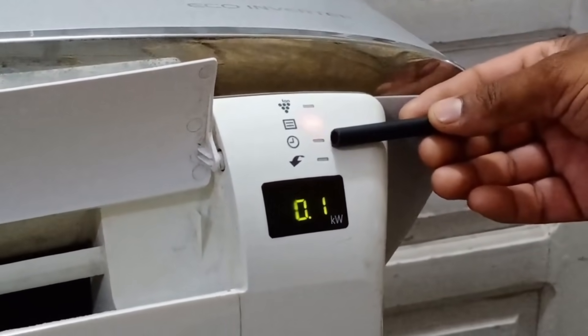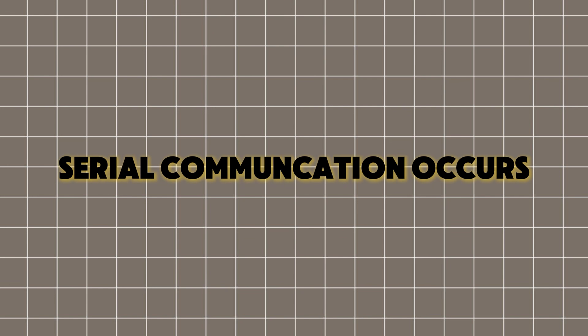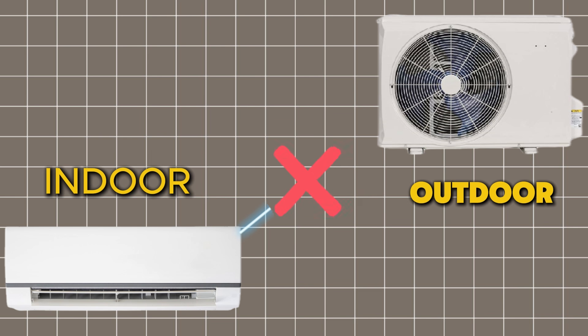This indicates that the issue is a serial communication error. A serial communication error occurs when there is no proper connection or communication between the indoor and outdoor units.